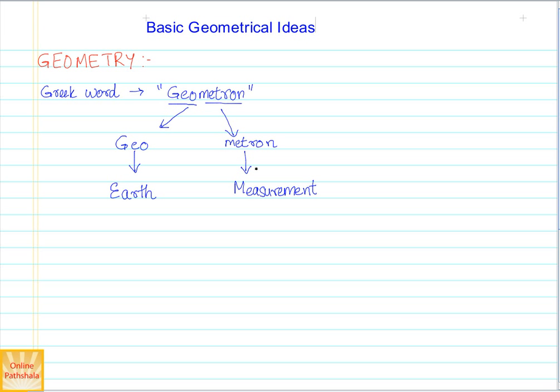So geometry comes from two composite words meaning earth and measurement. What does this imply? It has something to do with measurement and earth. Earth here is representative - it basically implies the matter that surrounds us, all the forms that we see.